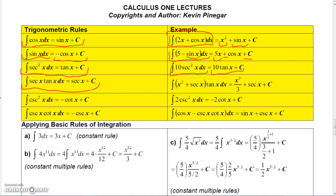Since the derivative of secant x is secant x times tangent x, the integral of secant x tangent x equals secant x plus a constant. So for the integral of x² + secant x · tangent x dx, integrate x² to get x³/3, and integrate secant x · tangent x to get secant x. The result is x³/3 + secant x plus a constant.